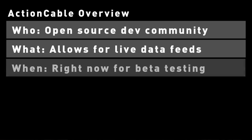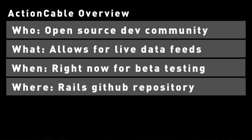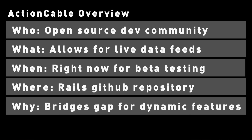For the WHEN: it is available now and will be officially released when Rails 5 is considered the stable version. For the WHERE: you can get it from the Rails GitHub repository. For WHY this is important: users are now expecting applications to be more dynamic — having stateless apps aren't good enough anymore — and a tool like Action Cable will let you deliver real-time data and updates to users while still within the Rails framework ecosystem.